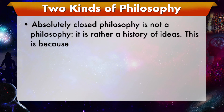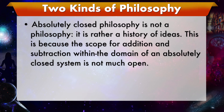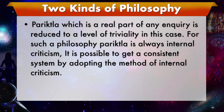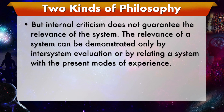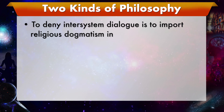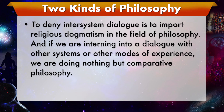An absolutely closed philosophy is not a philosophy — it is rather a history of ideas. This is because the scope for addition and subtraction within the domain of an absolutely closed system is not much open; particularity, which is a real part of any inquiry, is reduced to a level of triviality in this case. For such a philosophy, it is always internal criticism. It is possible to get a consistent system by adopting the method of internal criticism, but internal criticism does not guarantee the relevance of the system. The relevance of a system can be demonstrated only by inter-system evaluation, or by relating a system with the present modes of experience. To deny inter-system dialogue is to import religious dogmatism into the field of philosophy — and if we are entering into a dialogue with other systems or other modes of experience, we are doing nothing but comparative philosophy.